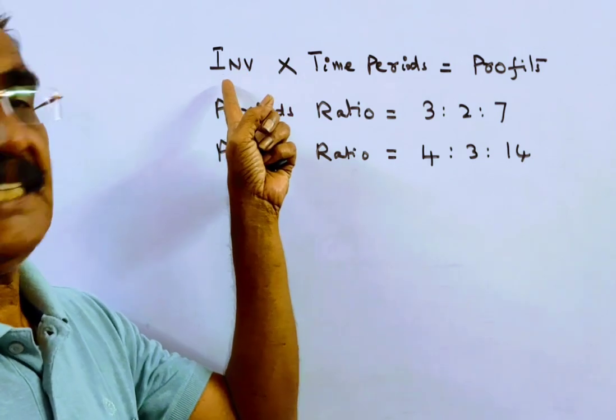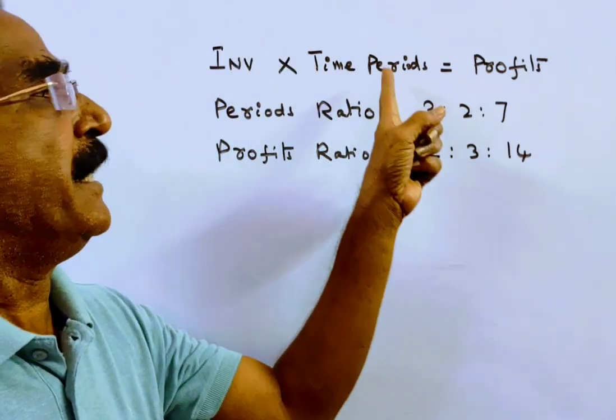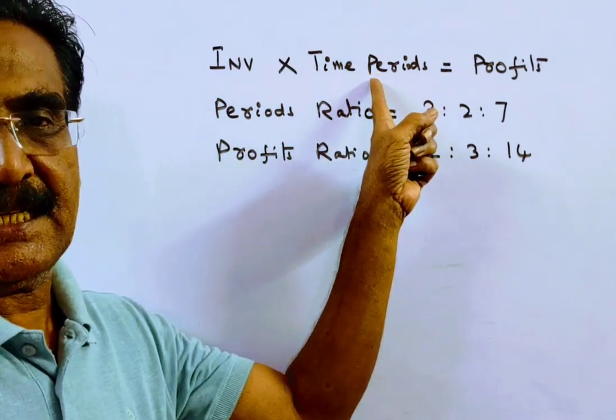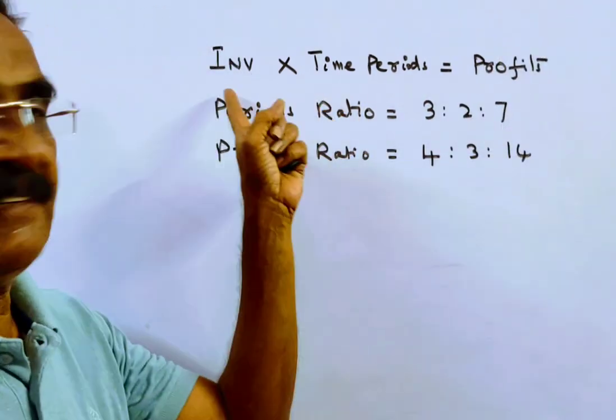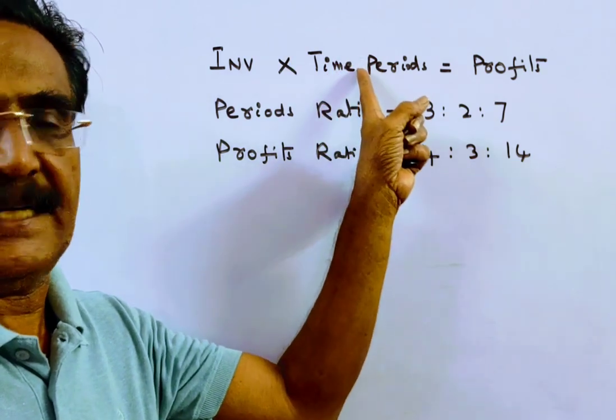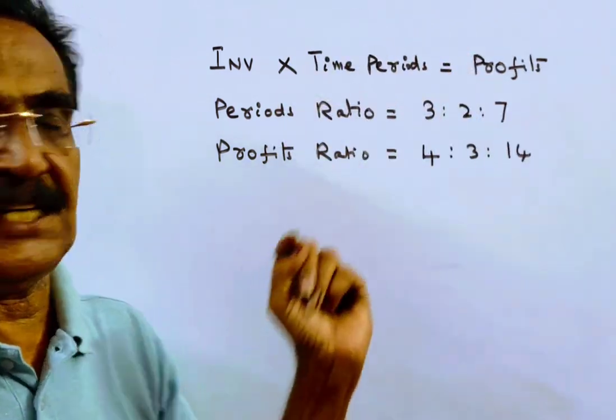Friends, we know investments multiplied by time periods is equal to profits ratio. Investments multiplied by time periods is equal to profits ratio.